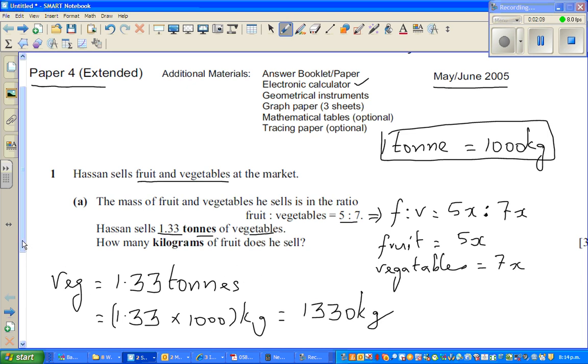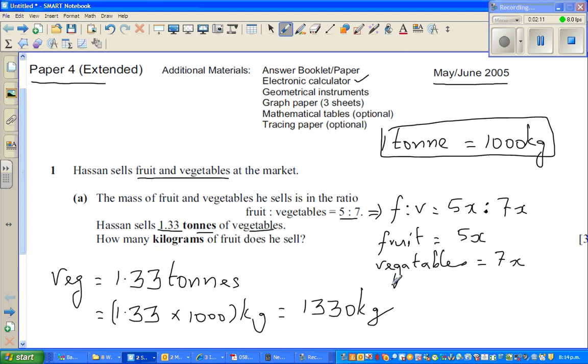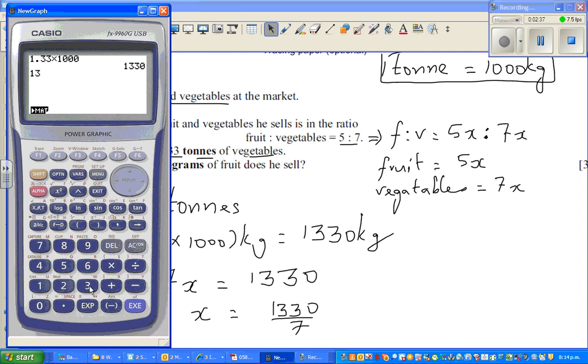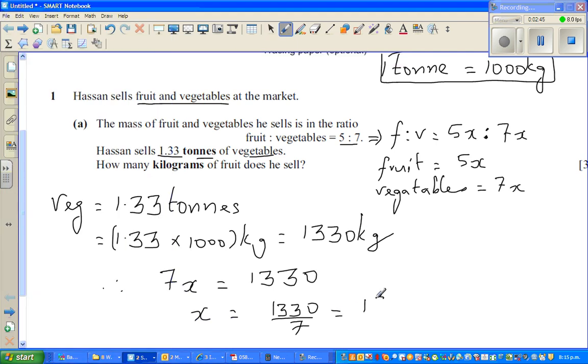So now can I say if this is vegetables, can I equate this 7x with this 1330? Because this is vegetable. Therefore, 7x is equal to 1330. So if you divide both sides by 7, 1330 divided by 7 gives you 190 kg. X stands for 190 kg.